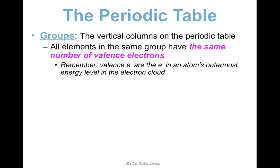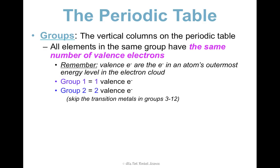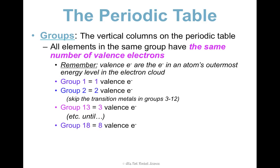What you need to understand for now is how many valence electrons each group has. Every element in group one has one valence electron. Group two has two valence electrons. We're going to skip the transition metals in groups three through twelve and talk about those a little bit later. Group thirteen has three, group fourteen has four, fifteen has five, sixteen has six, seventeen has seven, all the way until group eighteen has eight valence electrons. It follows a nice pattern if you just skip those transition metals. The only exception is helium in group eighteen — it actually only has two, and we'll talk about why in a minute.